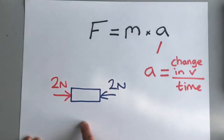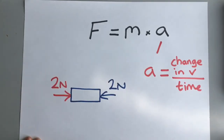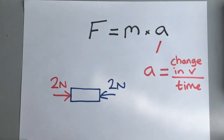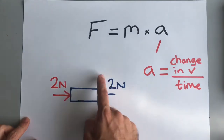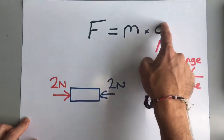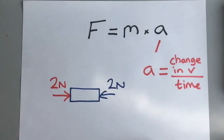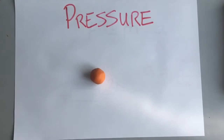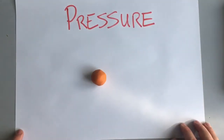When the forces are balanced, it can either mean the object is not moving, or if it is already moving, it is travelling at a constant speed because acceleration is zero. There's another thing closely linked to force, and that is something called pressure.